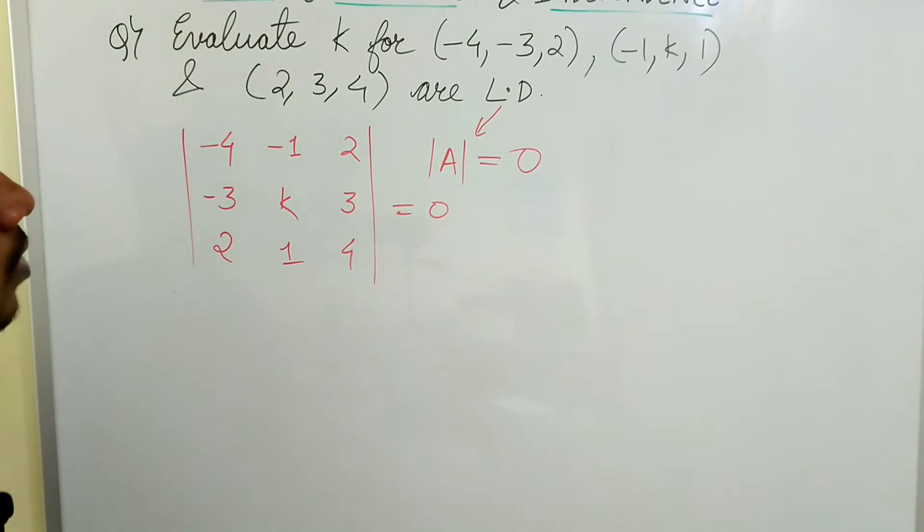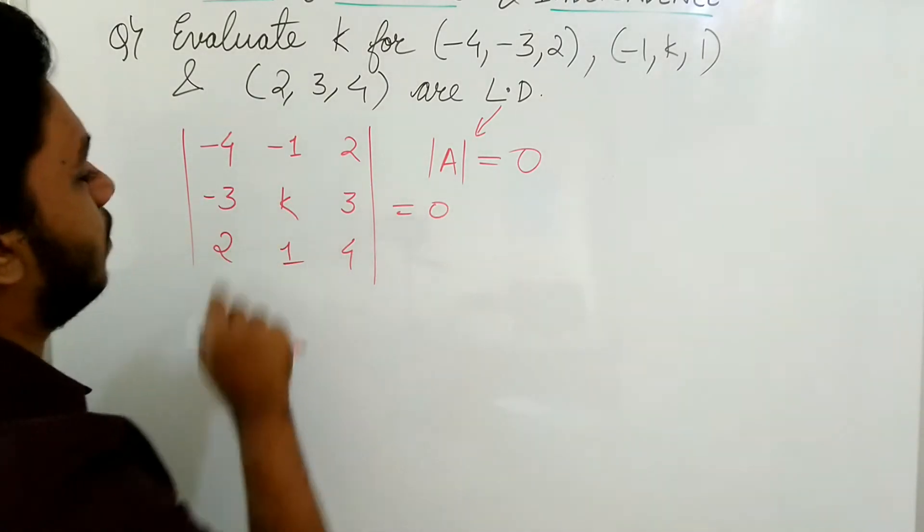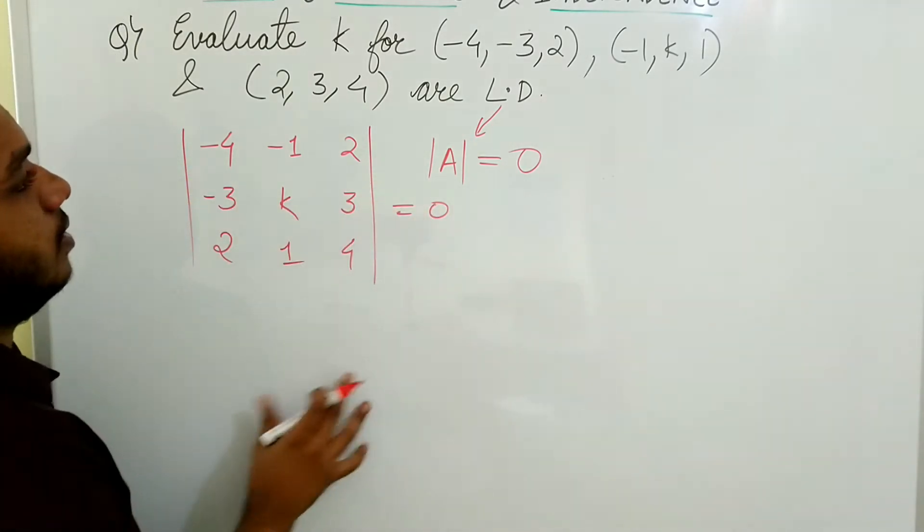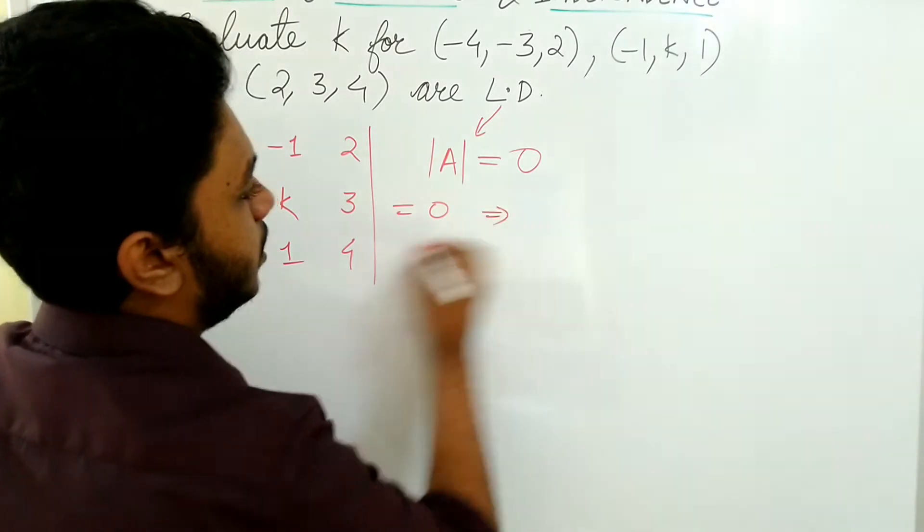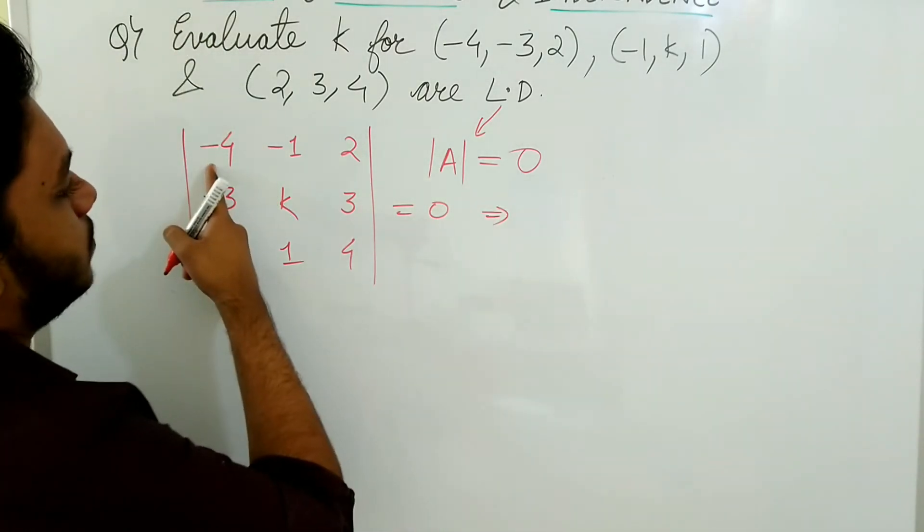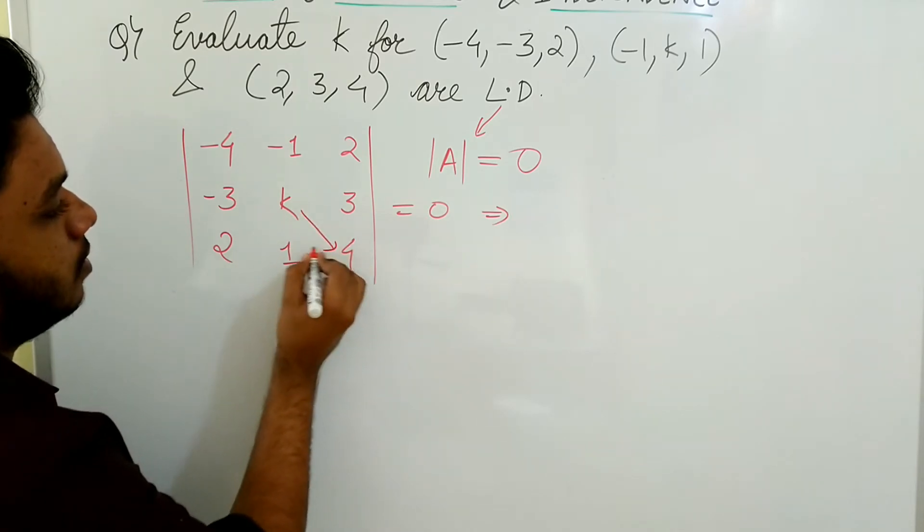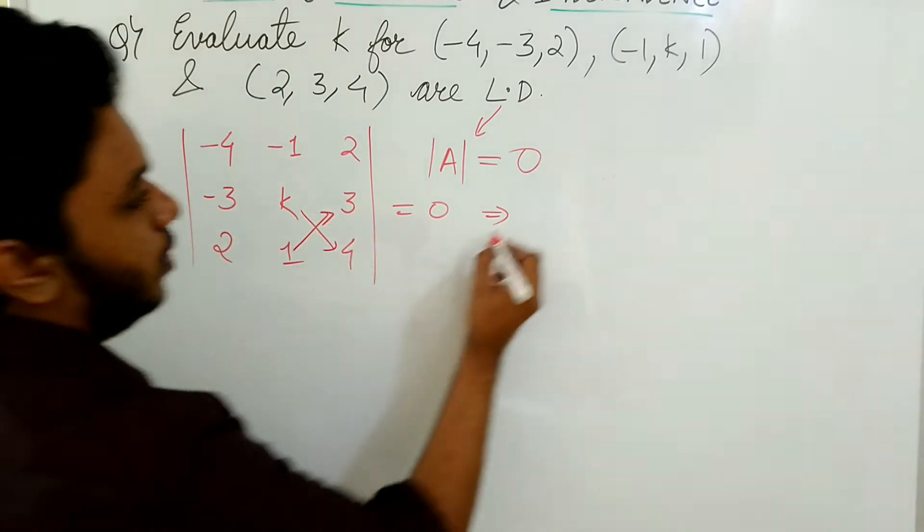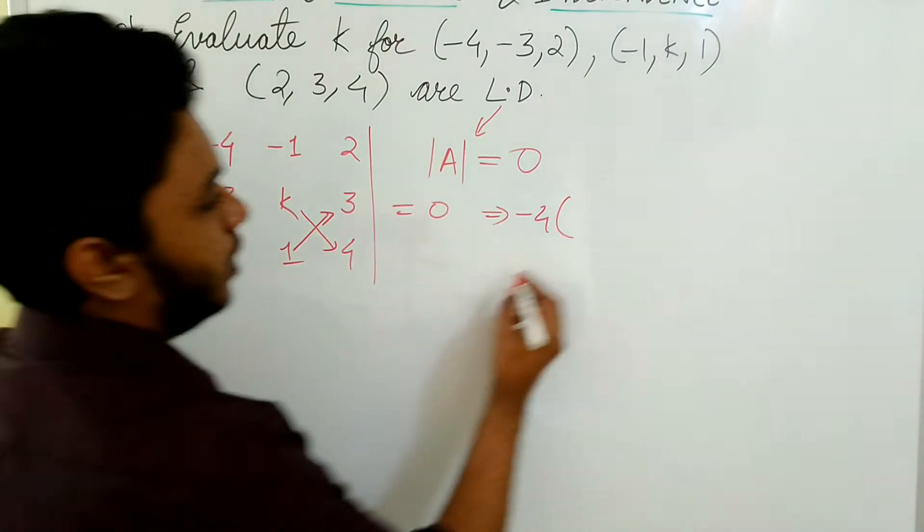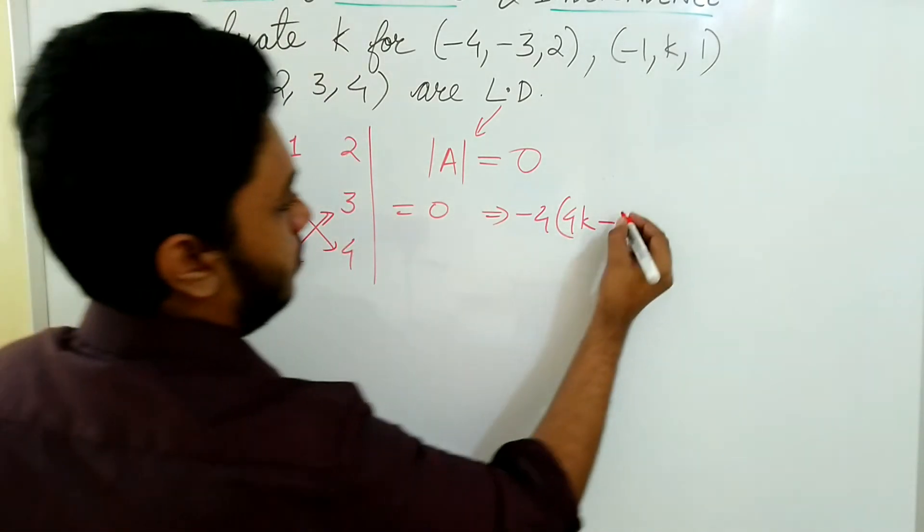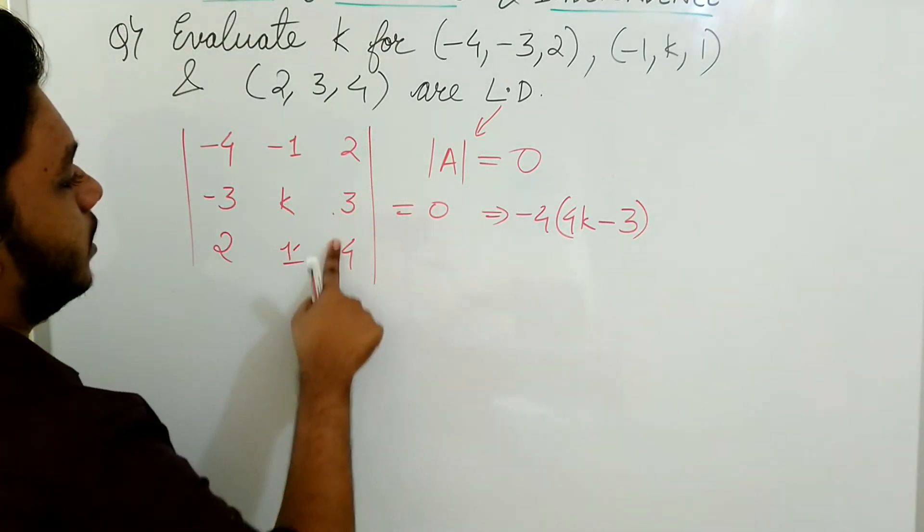Now I need to find the determinant in order to get the value of k. Expanding over the first row, I will get: -4 into (4k minus 3).